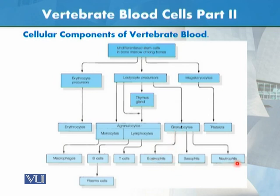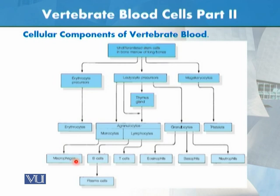The granulocyte types include basophils, neutrophils, and eosinophils. Then there are agranulocytes — monocytes and lymphocytes, which include T cells and B cells. B cells and monocytes give rise to or develop into macrophages, plasma cells, and the thymus gland plays an important role as well.